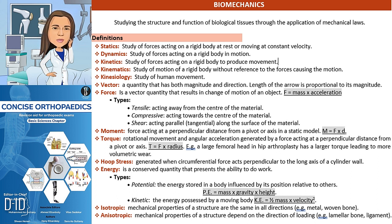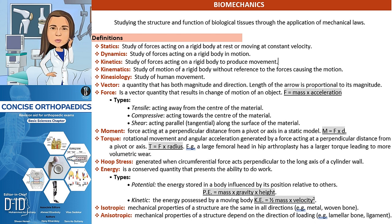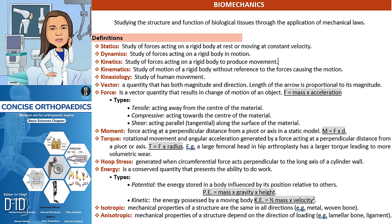A vector is a quantity that has both magnitude and direction, and the length of the arrow is proportional to its magnitude. Force is a vector quantity that causes a change in motion of an object. There are different types of forces such as tensile, compressive, and shear forces.